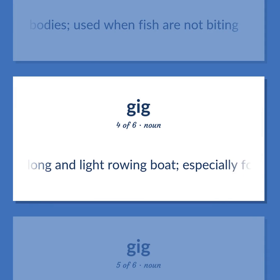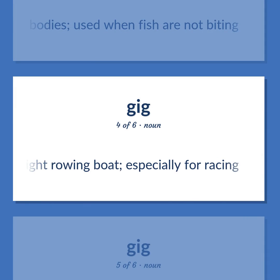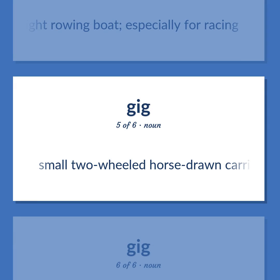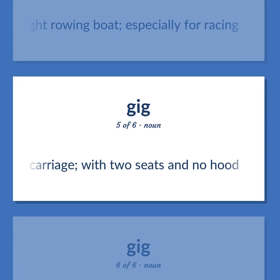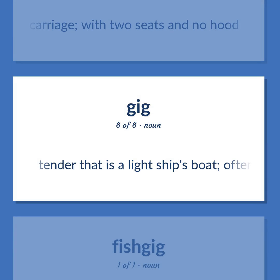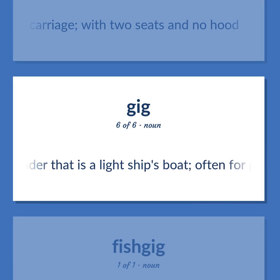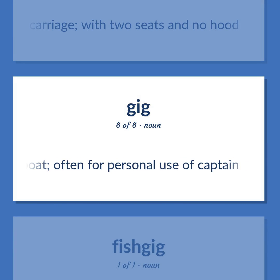Gig: A long and light rowing boat, especially for racing. A small two-wheeled horse-drawn carriage with two seats and no hood. Also, a tender that is a light ship's boat, often for personal use of the captain.